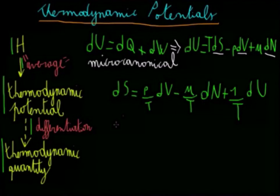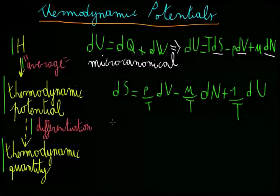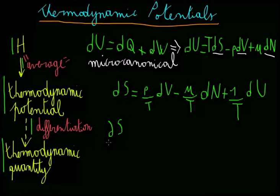Differentiating the entropy, we can compute all the other thermodynamic quantities. For example, the derivative of S with respect to U, taken while keeping V and N constant, is the inverse temperature, 1 over T.